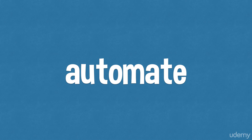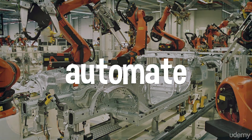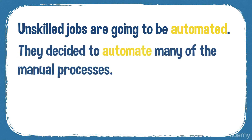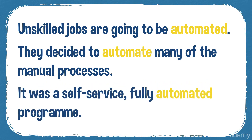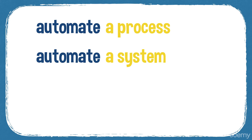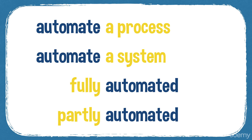The next word is 'automate.' If you automate something, you put in machines which can do the work instead of people — lots of robots. You can automate a factory, for example. Here's a factory in Germany that is automated. Unskilled jobs are going to be automated in the future. They decided to automate many of the manual processes — manual means by hand. It was a fully automated program.